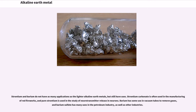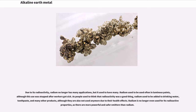Strontium and barium do not have as many applications as the lighter alkaline earth metals, but still have uses. Strontium carbonate is often used in the manufacturing of red fireworks, and pure strontium is used in the study of neurotransmitter release in neurons. Barium has some use in vacuum tubes to remove gases, and barium sulfate has many uses in the petroleum industry, as well as other industries. Due to its radioactivity, radium no longer has many applications, but it used to have many. Radium used to be used often in luminous paints, although this use was stopped after workers got sick. As people used to think that radioactivity was beneficial, radium used to be added to drinking water, toothpaste, and many other products, although these are also no longer used due to their health effects.